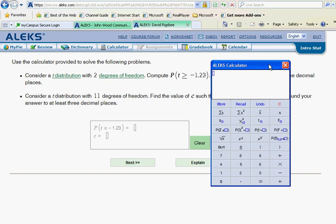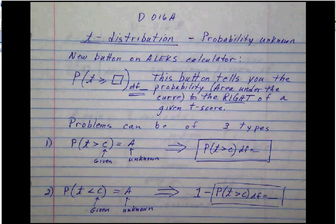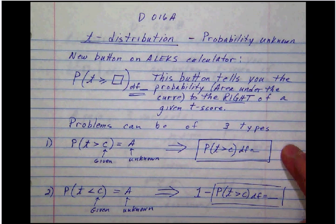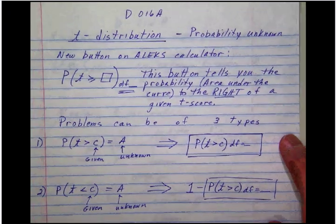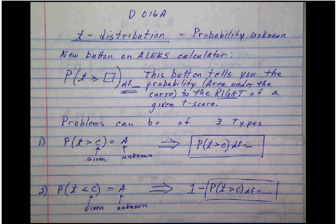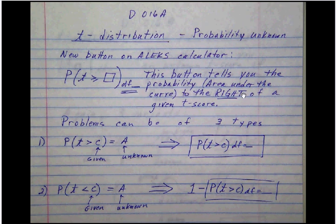Now, I've prepared a set of notes here for you to use. There are two pages of these, and the first page deals with the situation for the p of t-button. Let's review what this button does. The p of t-button tells you the area under the curve to the right of a given t-score.